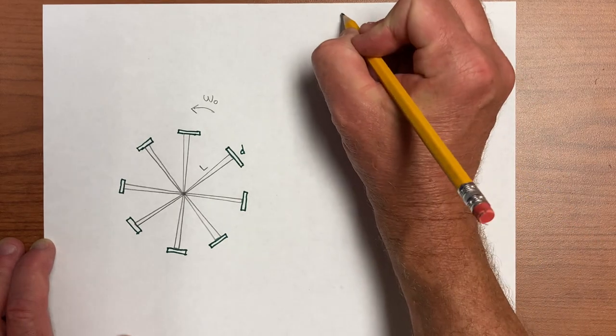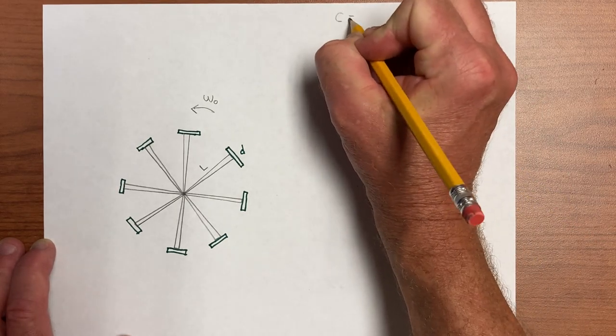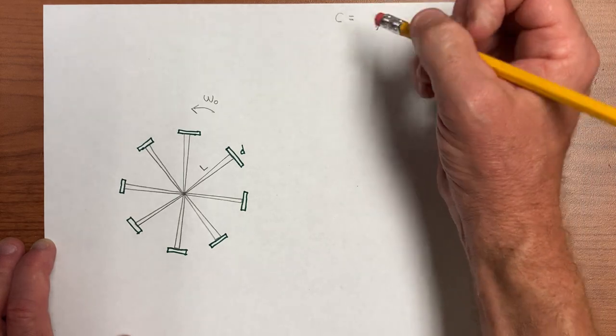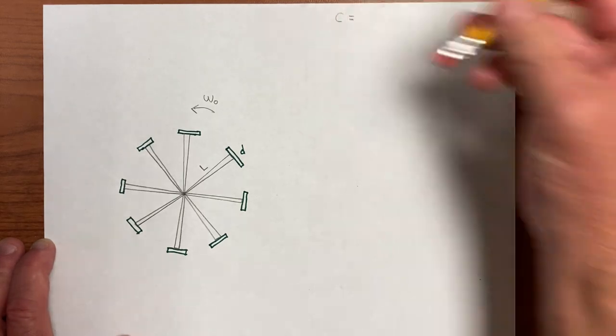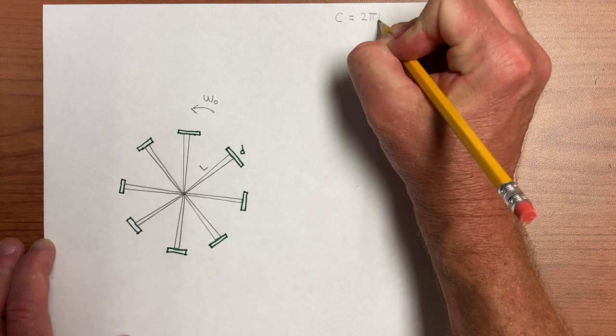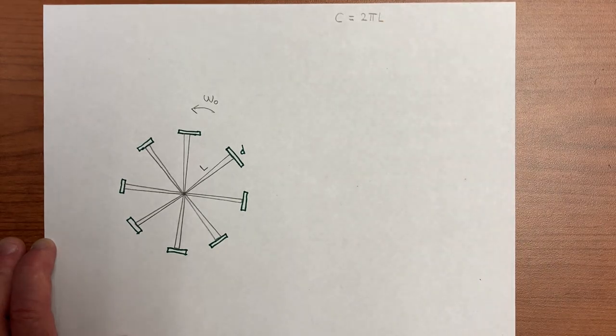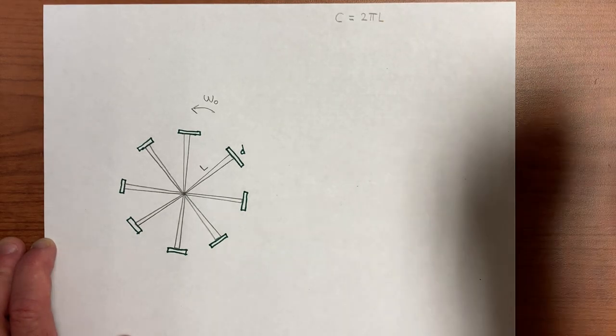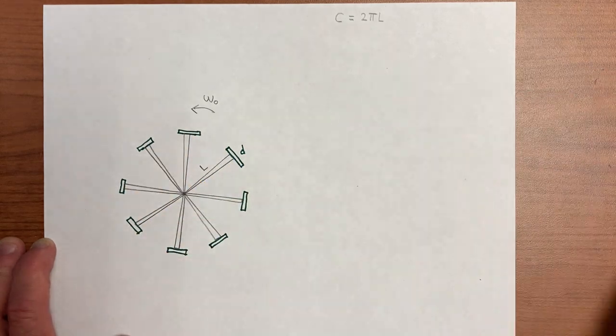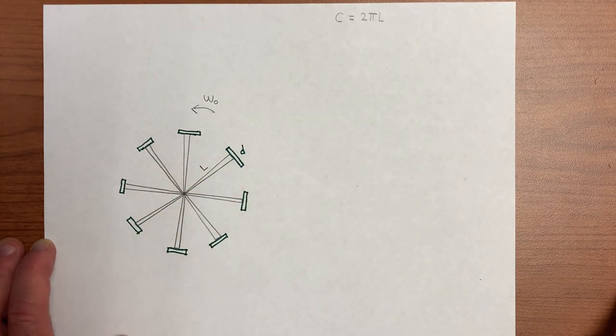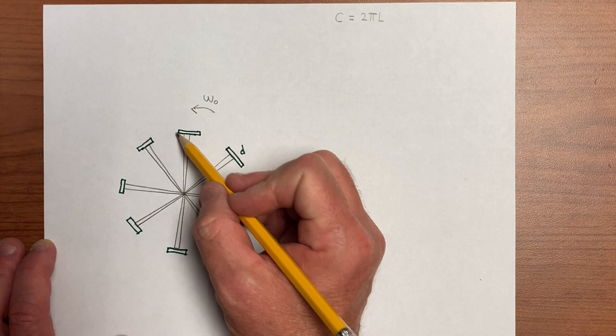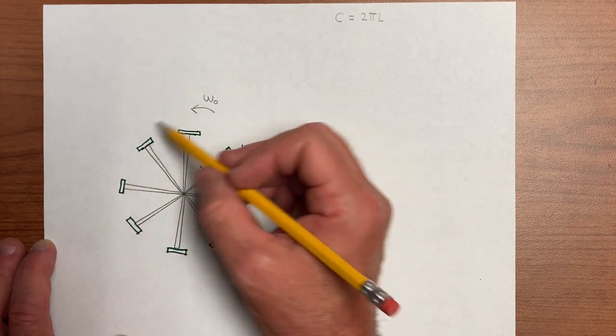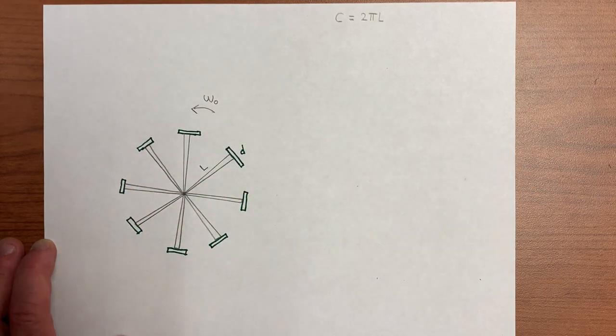So we can conclude that the circumference, the path traced out, is 2 pi L. We can infer that from the fact that this is a circle. We haven't quite measured it. We sort of approximate that, we can imagine approximating that with these rods.